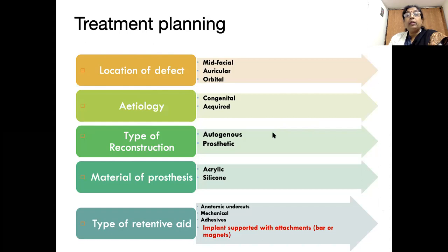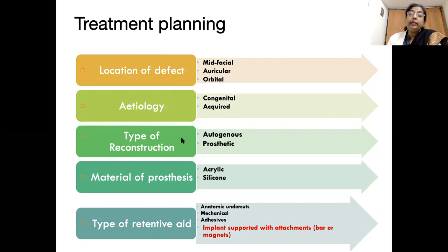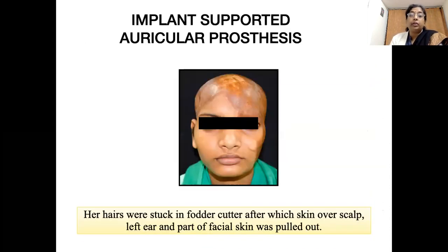Treatment planning depends on the location and etiology of the defect, how reconstruction will be done — whether with autogenous tissue or prosthetically — what material will be used, whether tissue undercuts are present, and what type of retentive elements will be used. All these factors affect treatment planning for these patients.